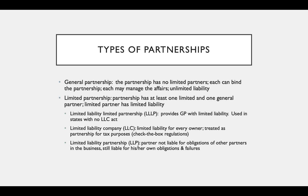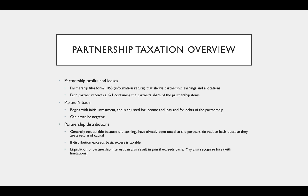In partnership taxation, partnerships are flow-through entities. Partnership profits and losses are disclosed on Form 1065, which is an information return that goes to the IRS. No money has to accompany that return. Also, a Schedule K is filed, and then each partner receives a Schedule K-1 which contains the partner's share of the partnership items. These items must be reported on the individual Form 1040.